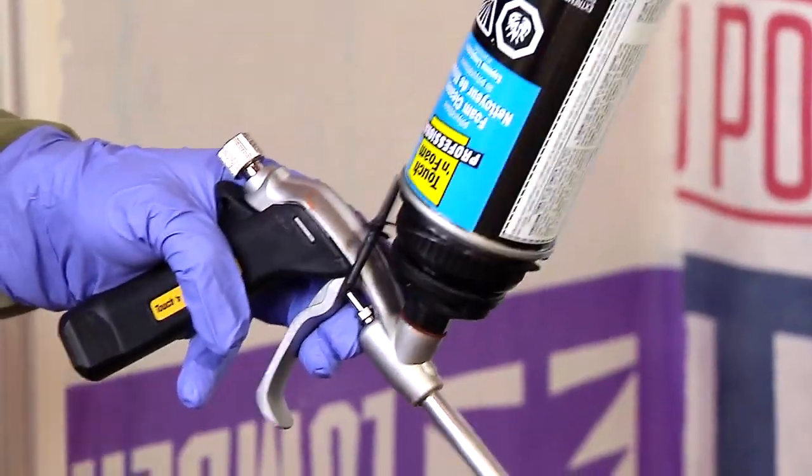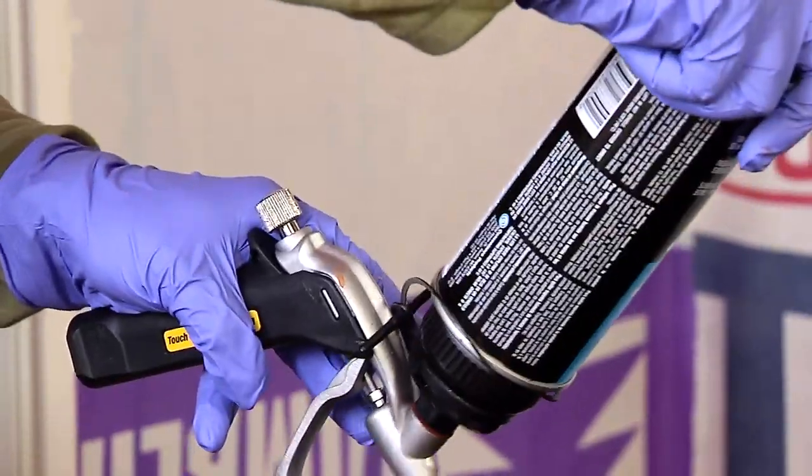Next, remove the spray tip and directly attach the cleaner to the applicator basket, twisting gently.